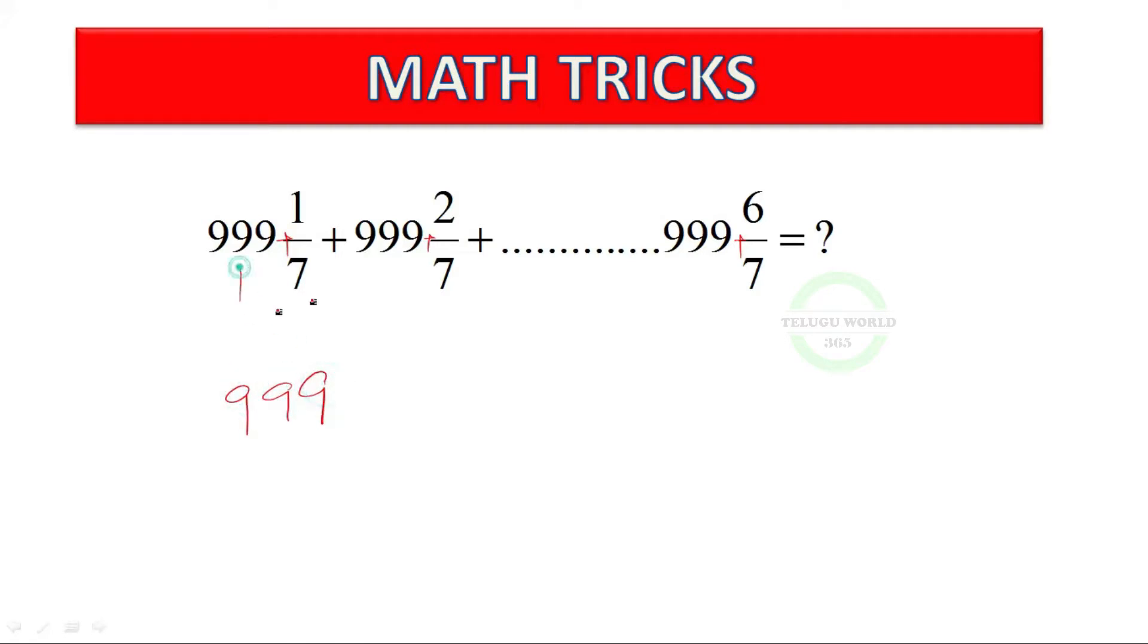999, any times and six times. So, 999 into 6. Plus, then bracket. Other remaining number seven, one by seven. Plus, already 999 remaining. So, two by seven and so on up to six by seven.